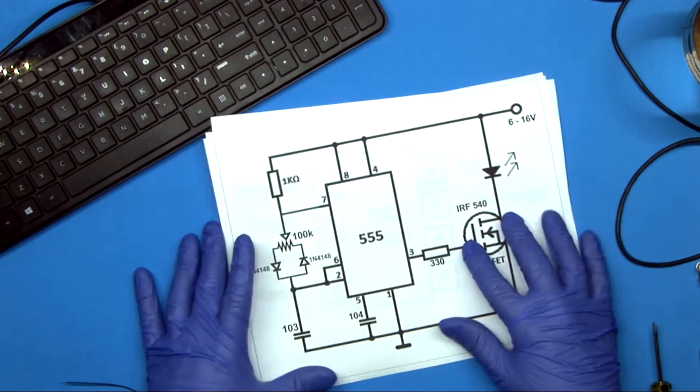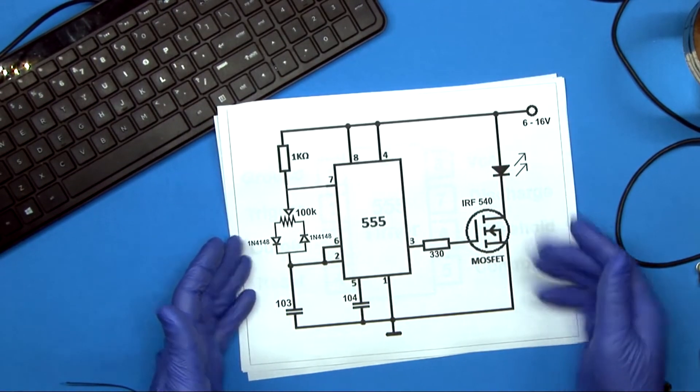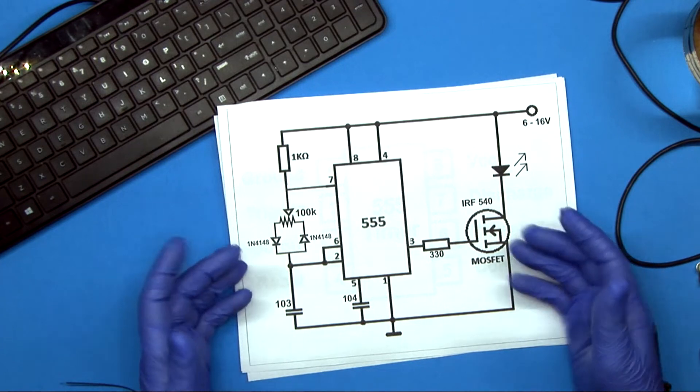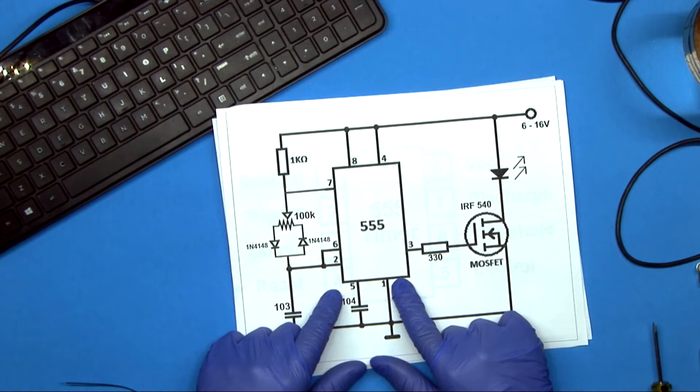Now, this here is, it's no secret, you can find this anywhere on the Internet. This is the basic design, basic circuit for using a 555 for a PWM dimmer.